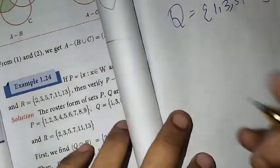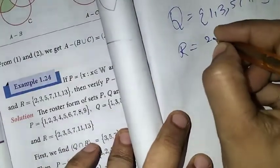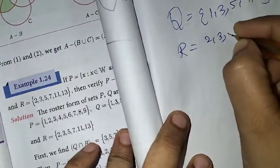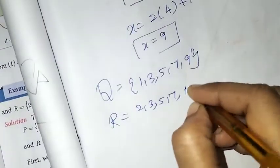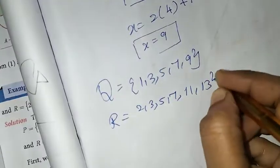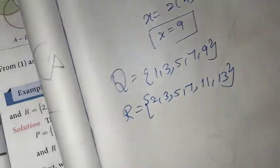And R is the set of prime numbers: {2, 3, 5, 7, 11, 13, ...}. So we have R as {2, 3, 5, 7, 11, 13}.